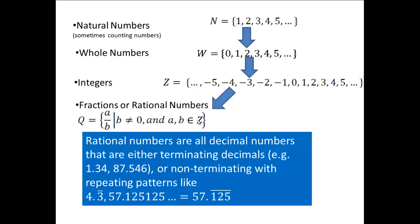We can also represent rational numbers as decimal numbers. They are either terminating decimals — a finite number of digits — or non-terminating with a repeating pattern, like 4.3 bar. So all decimal numbers with terminating decimal notation or a non-terminating repeating pattern are called rational numbers.